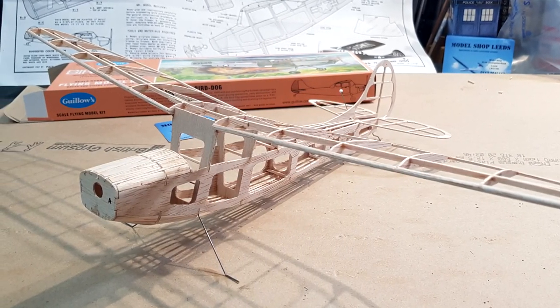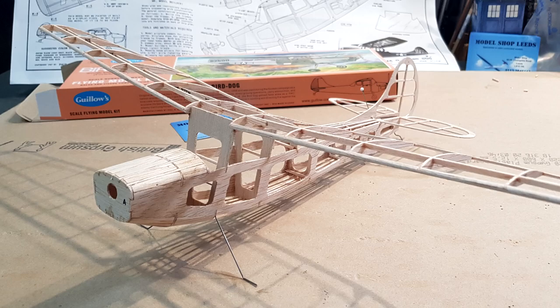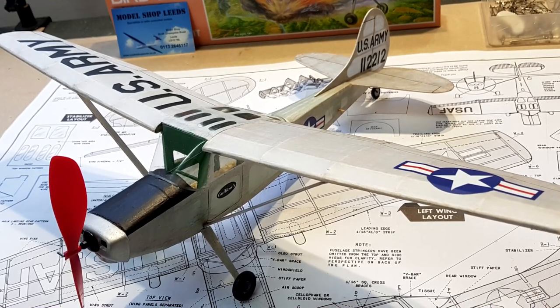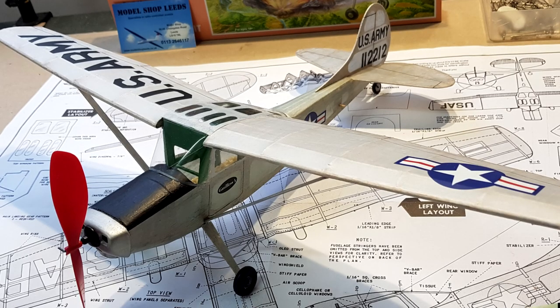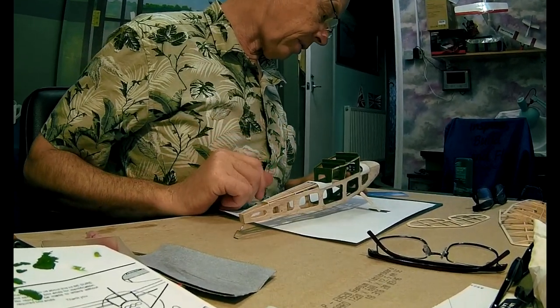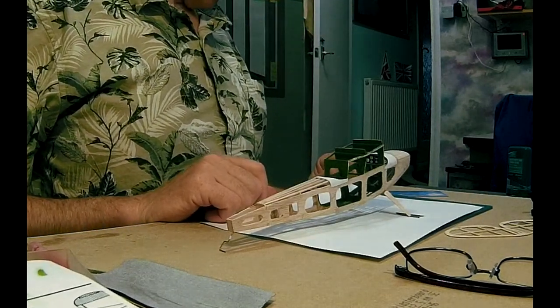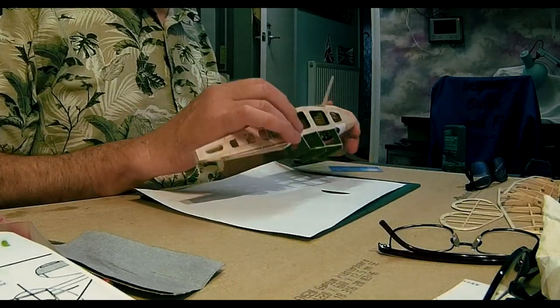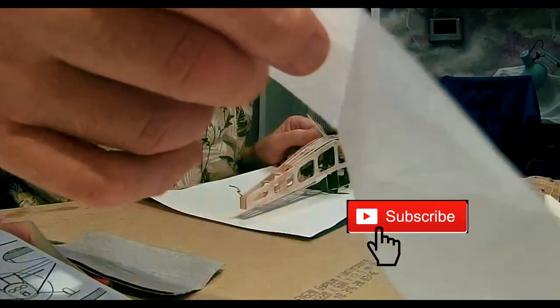Okay guys, hi, welcome back. Cliff here. This is going to be part two video of my Grillo's Bird Dog build. I'm going to tissue cover it, and that's what this video is all about. I've got the model from Model Shop Leeds. I'm going to leave their card in the corner. I'm going to start with the bottom. You start with the bottom, do the sides, and then over the top. I've cut a piece of tissue out already.